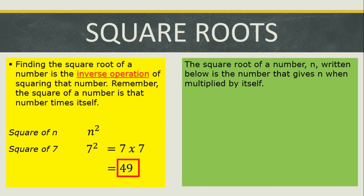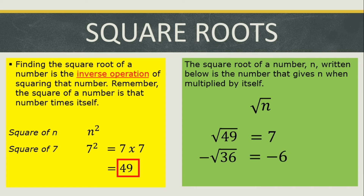The square root of a number n is the number that gives n when multiplied by itself. So we have the square root of n. If we have the square root of 49, the answer is positive 7. If we have negative square root of 36, the answer is negative 6. And if we have positive or negative square root of 100, the answer is positive or negative 10.